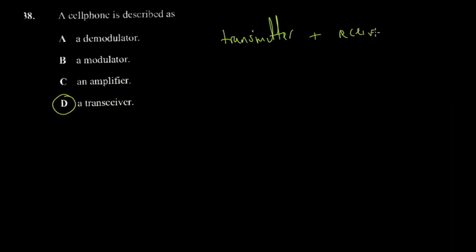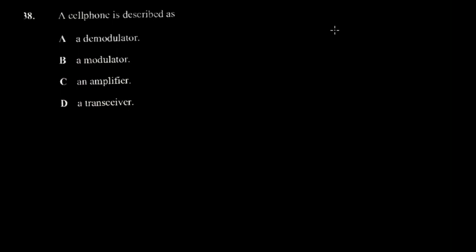A cell phone — you can use it to transmit messages, and you can also use it to receive messages. An amplifier is used in signal processing to enhance quality or to enhance the amplitude of a wave.